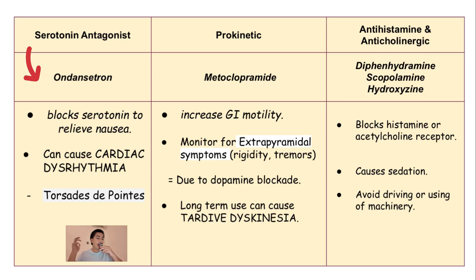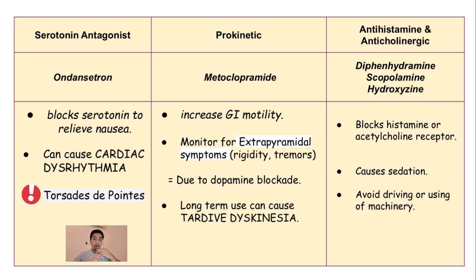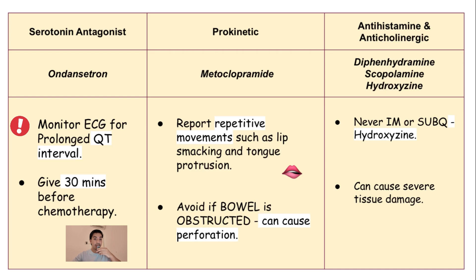You have to remember the mode of action of ondansetron, or serotonin antagonists: it blocks serotonin to relieve nausea. The most common adverse effect of ondansetron or serotonin antagonists is torsades de pointes, because it's French. If you're asked on the NCLEX or PNLE what torsades de pointes is, it's a type of cardiac dysrhythmia — it can cause abnormal rhythm of the heart. The most important question is how do you know it's torsades de pointes? You have to look for prolonged QT interval in the ECG or electrocardiogram. That is how you know it's torsades de pointes.